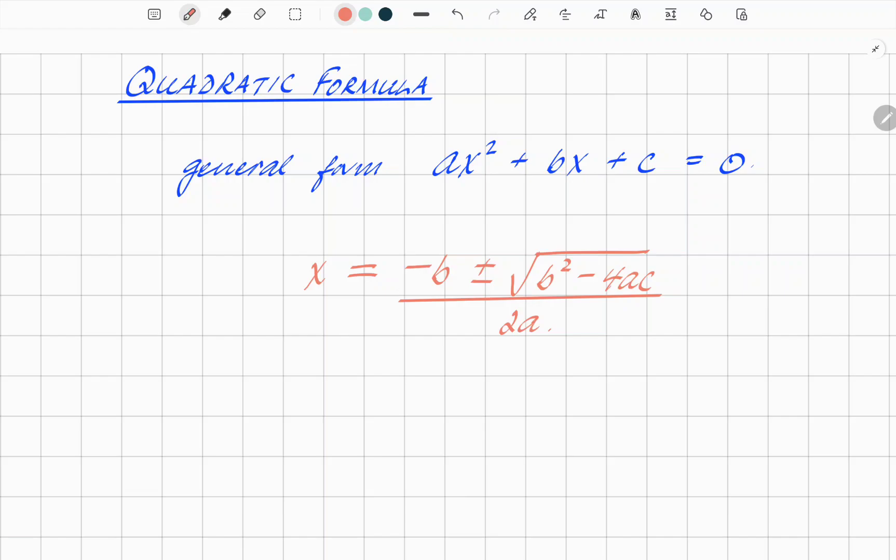And those letters are referring to the coefficients of the equation itself. So a, b, and c as in the equation, and the solution here from the quadratic formula x equals something or another is when the quadratic equation equals 0.